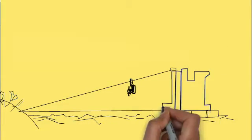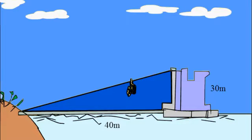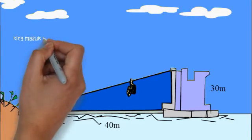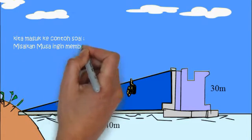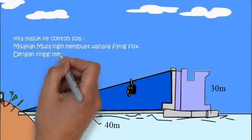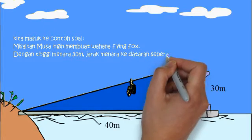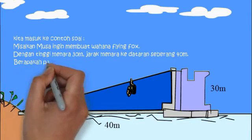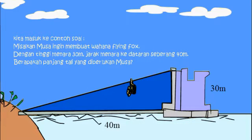Sekarang, perhatikan baik-baik gambar flying fox ini. Sekarang kita masuk ke contoh soal. Misalkan, Musa ingin membuat wahana flying fox dengan tinggi menara 30 meter. Jarak menara ke dataran seberang 40 meter. Berapakah panjang tali flying fox yang diperlukan Musa?